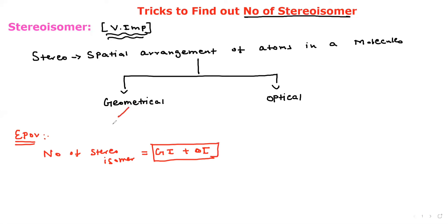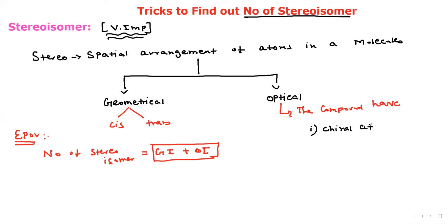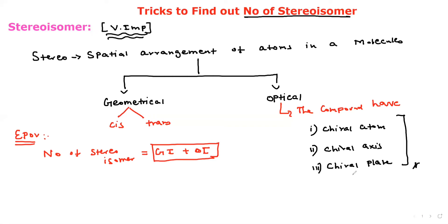Geometrical isomerism means cis-trans isomerism. For optical isomerism, the compound must have: (1) a chiral carbon or chiral atom, (2) a chiral axis, or (3) a chiral plane. Any one of these three conditions makes a compound optically active.